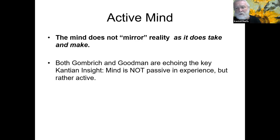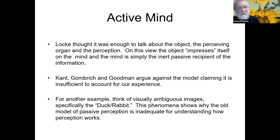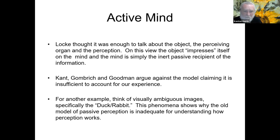Gombrich and Goodman are echoing the Kantian insight that the mind is not passive in experience but active. Locke thought it was enough to talk about the object, the perceiving organ, and the perception — on his view, the object impresses itself on the mind, and the mind is the inert, passive recipient of the information. Kant, Gombrich, and Goodman argue against that model, claiming it is insufficient to account for experience.